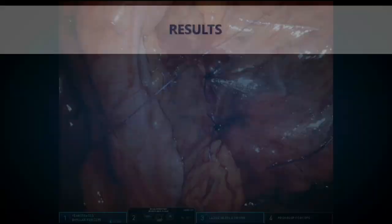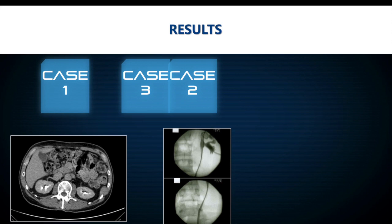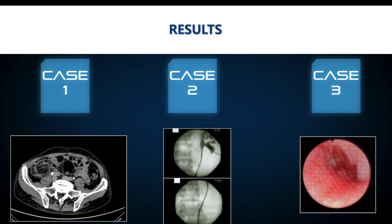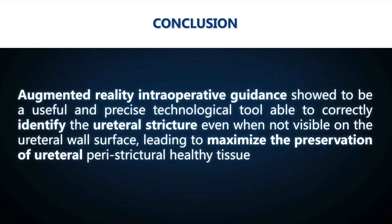In all three cases, the surgery was successful without significant intra- and post-operative complications. All examinations performed confirmed the resolution of the stricture. Augmented reality intraoperative guidance proved to be a useful and precise technological tool, able to correctly identify the ureteral stricture even when not visible on the ureteral wall surface, leading to maximized preservation of the ureteral peristenotic healthy tissue.